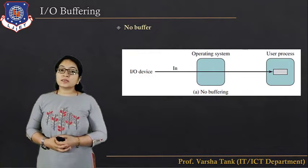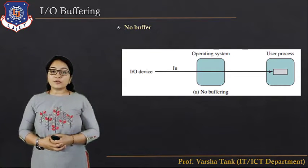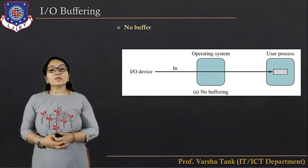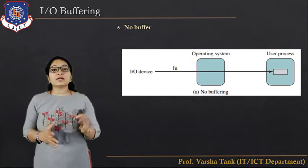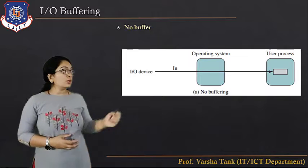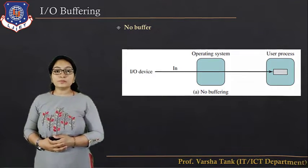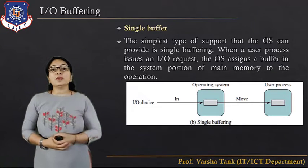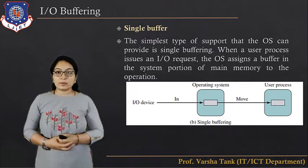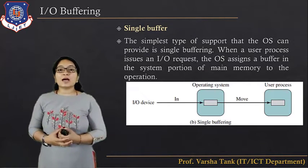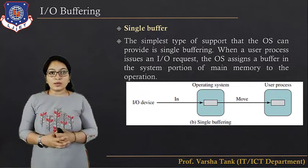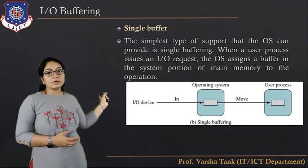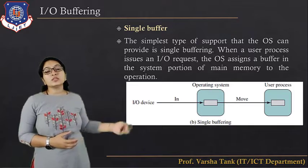The next topic is IO buffering, and there are different types. The first type is no buffer — there is no buffer and the IO device directly communicates with the user process. The second type is single buffer: the operating system assigns a buffer in the system portion of main memory to operations when a user process issues an IO request.